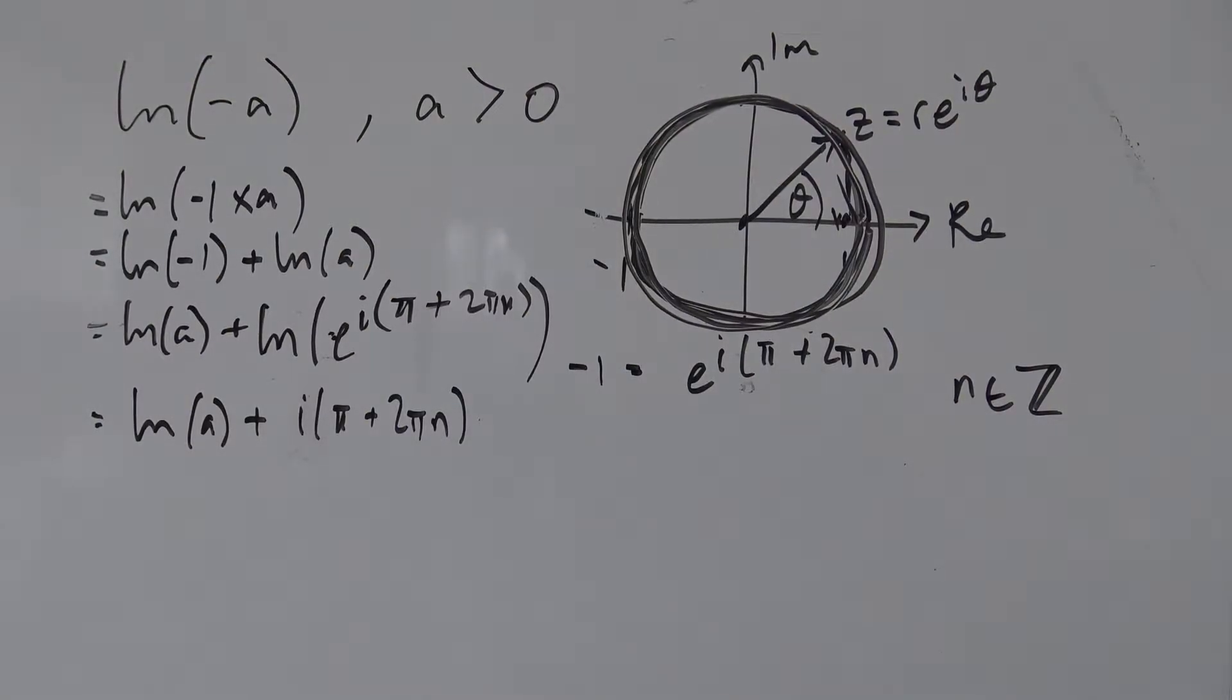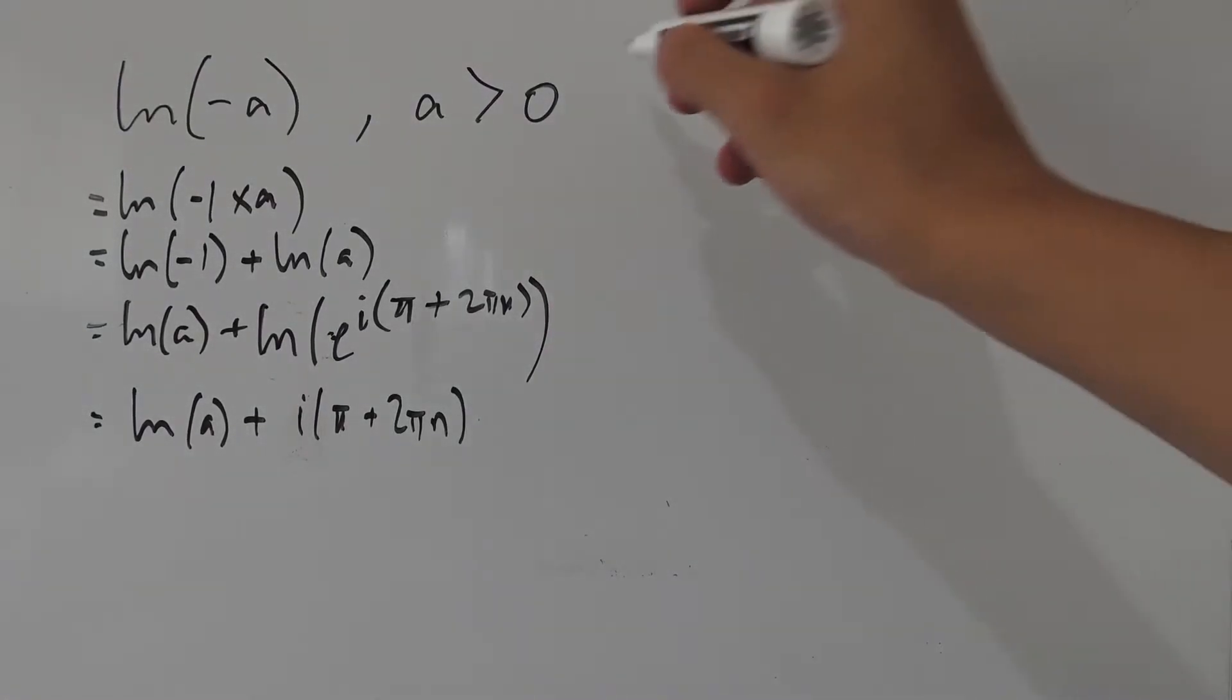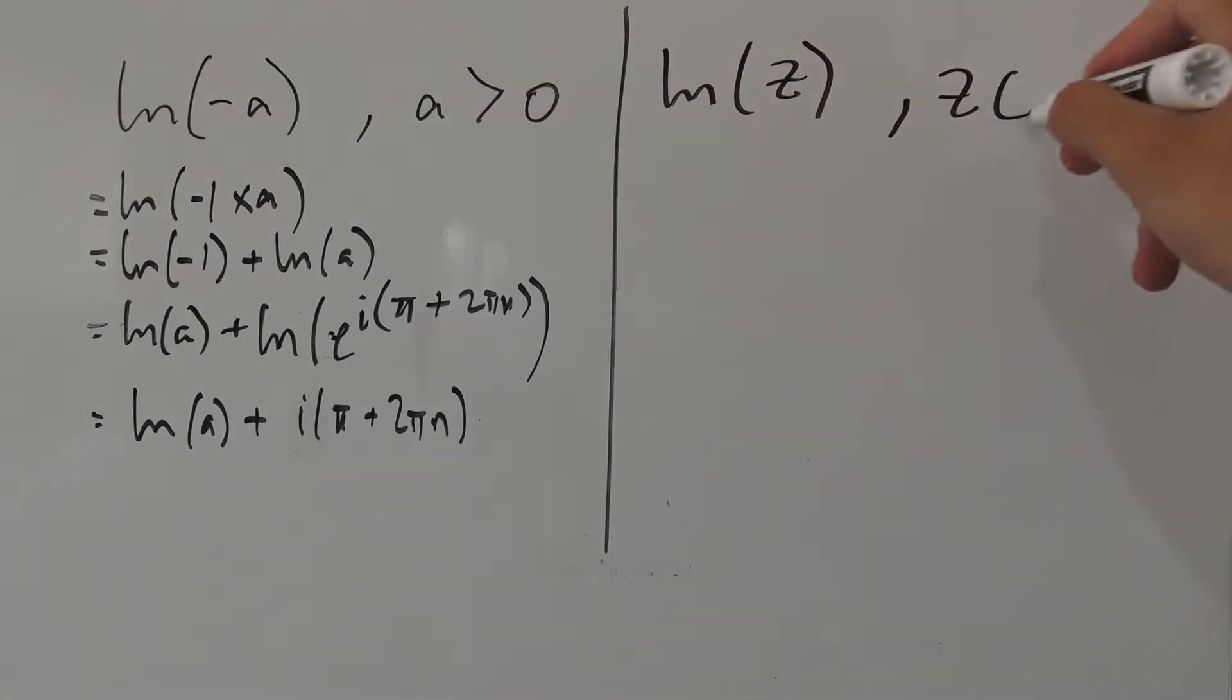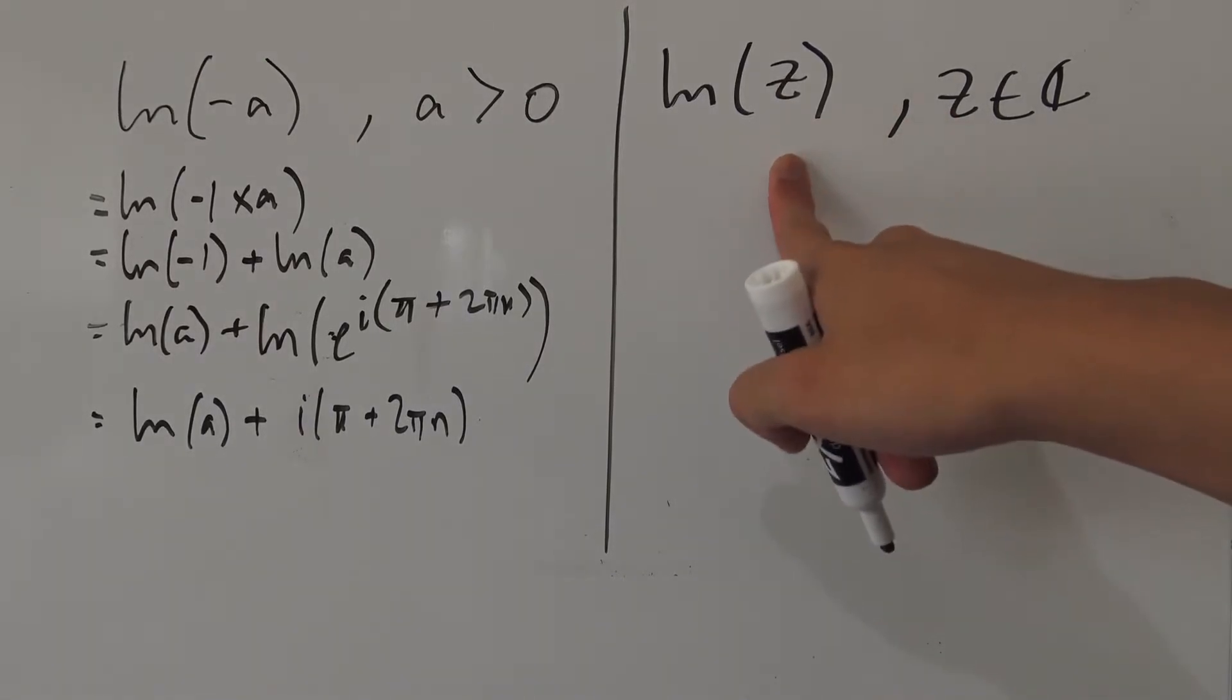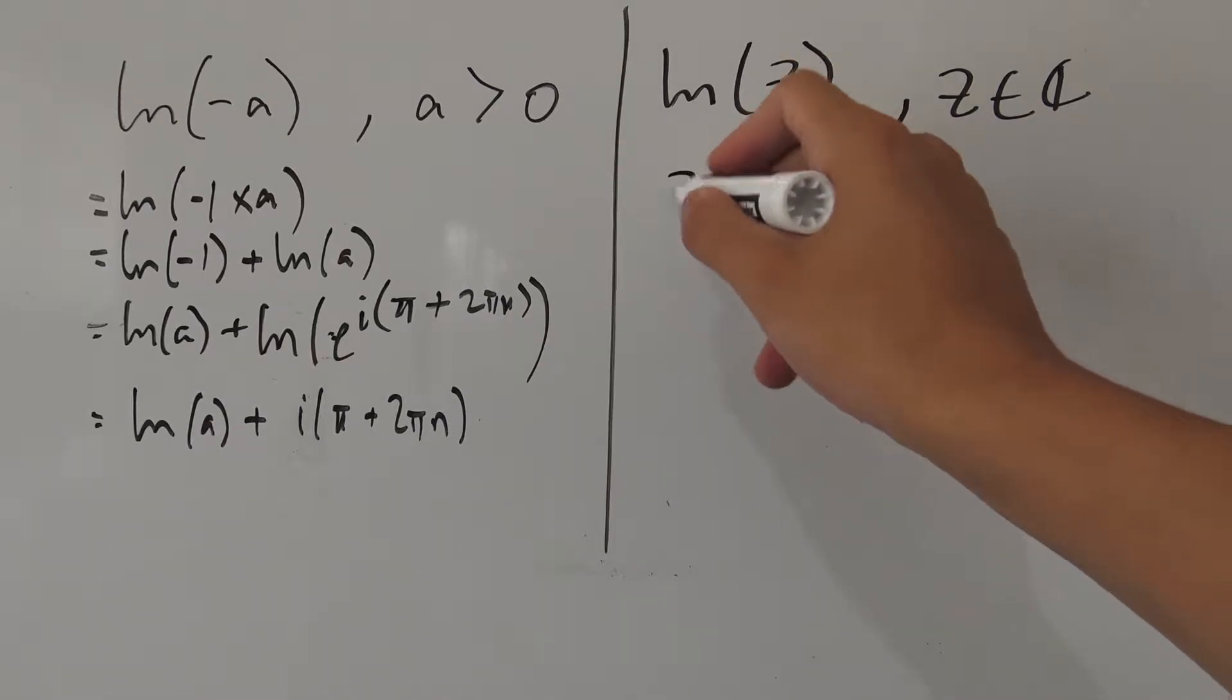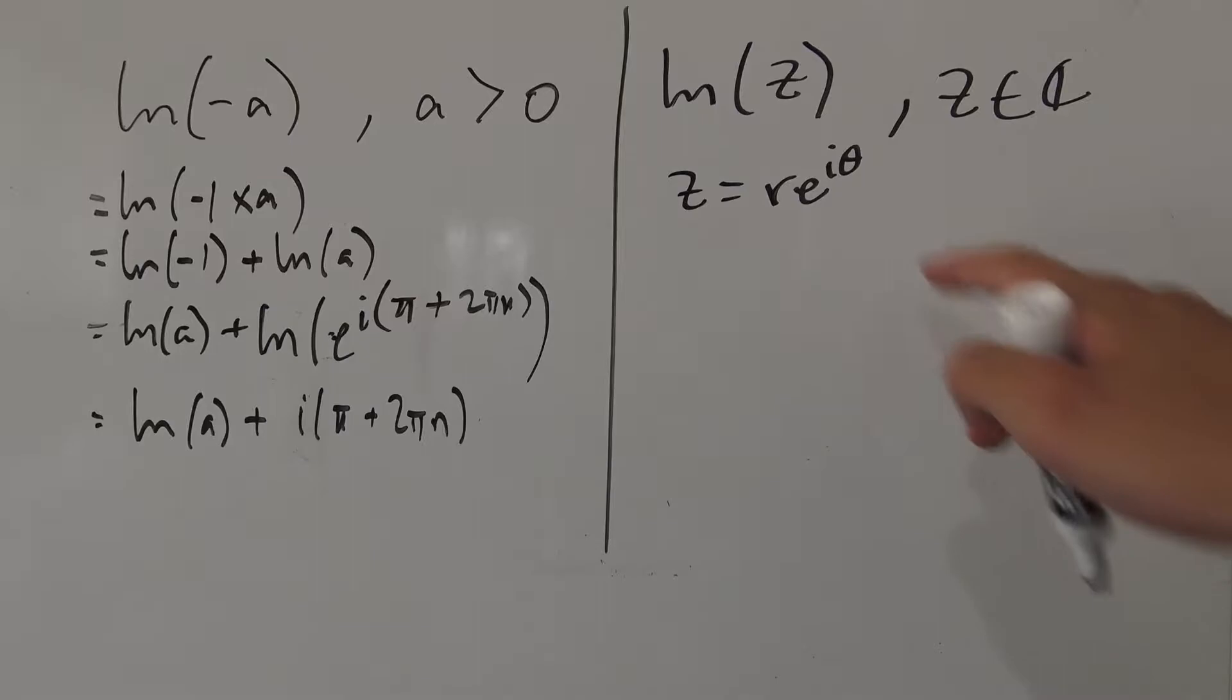So now like I said before, we're going to find the natural log of a complex number. So next we want to find the natural log of complex number z, so z is an element of the complex numbers. So let's do the exact same thing that we did with our negative one. Our z is nothing but r times e to the i theta.